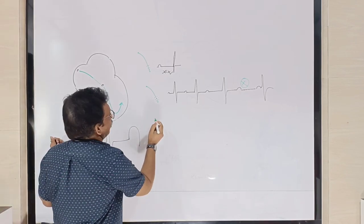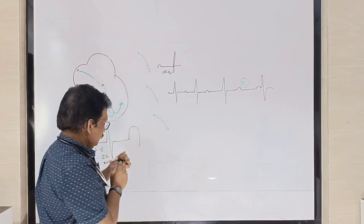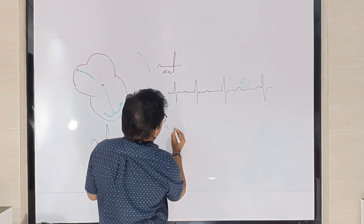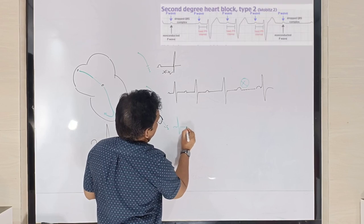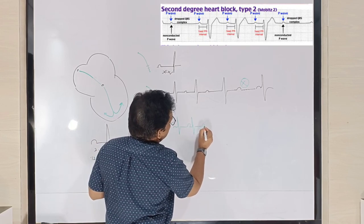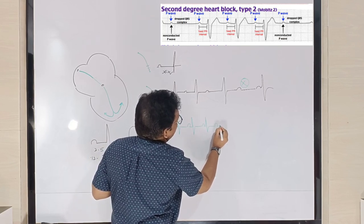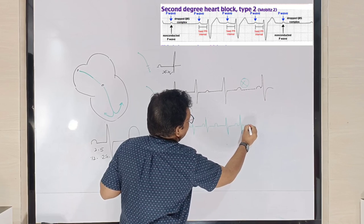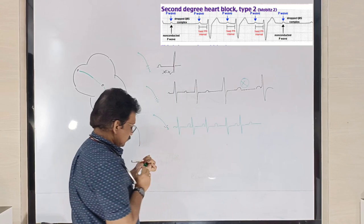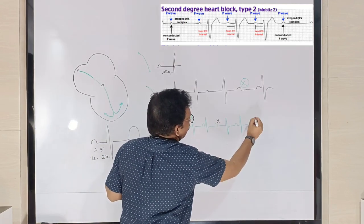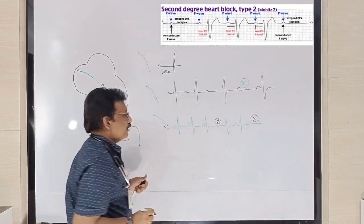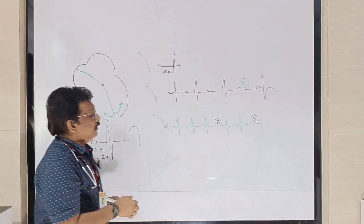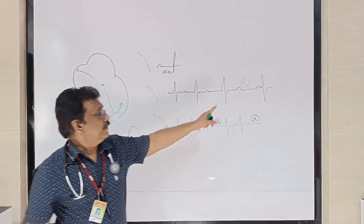The other type of second degree heart block is Mobitz Type 2. Here all PR intervals are normal, and suddenly after one PR interval there is no QRS complex — without any progressive prolongation. A P wave appears without a following QRS. There may be multiple consecutive dropped QRS complexes. This is Mobitz Type 2 second degree heart block.